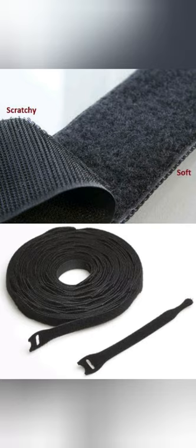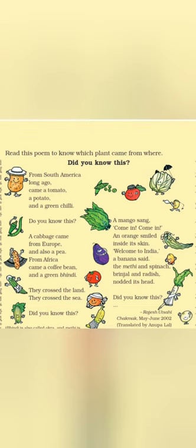Velcro वह चीज होता है जो हमारे shoes में, bags में, belts में लगाया जाता है - दो flap को चिपकाने के लिए। और इसी seed को देखकर George de Mestral को idea आया velcro बनाने का। Students, here are some pictures of velcro used in bags, shoes, belts, etc. Now, read this poem to know which plant came from where. जैसे कि आपने अभी समझा कि सभी seeds एक जगह पर नहीं उग सकते। Seeds एक जगह से दूसरी जगह पर अलग-अलग तरीकों से पहुँच ही जाते हैं - कुछ को wind यानि हवा ले जाती है, कुछ को water यानि पानी ले जाता है, कुछ को animals एक जगह से दूसरी जगह ले जाते हैं।